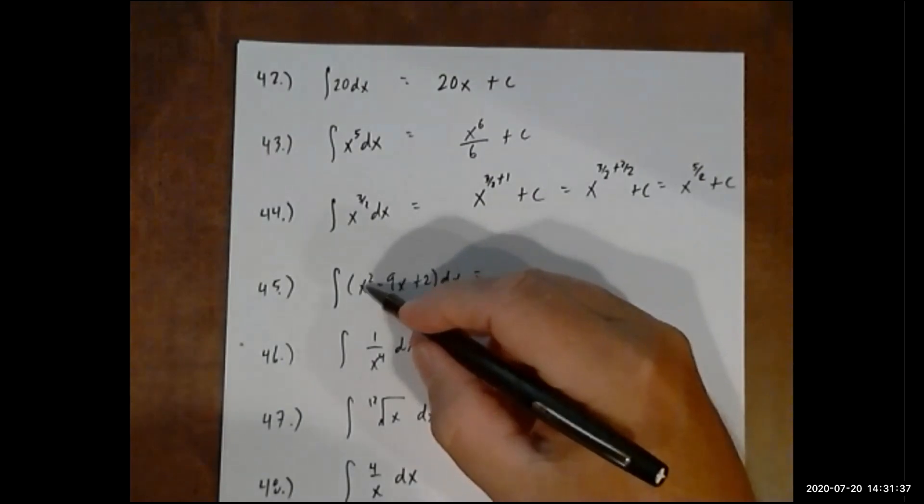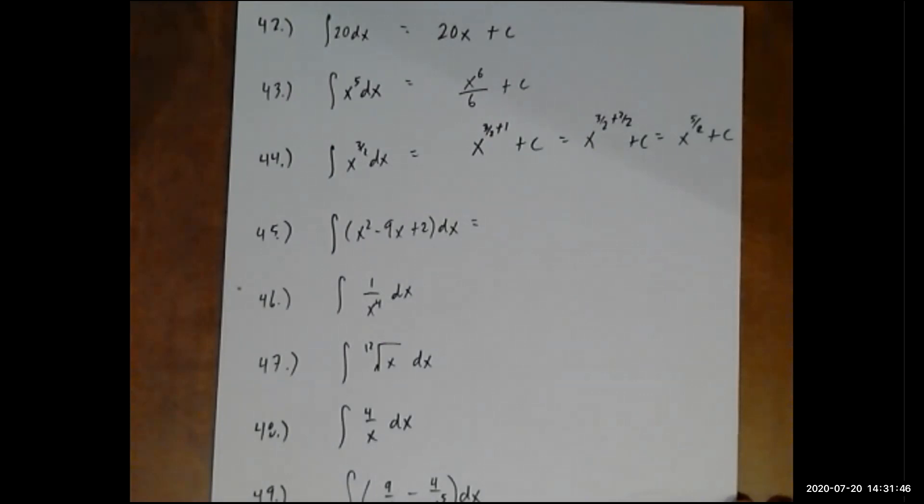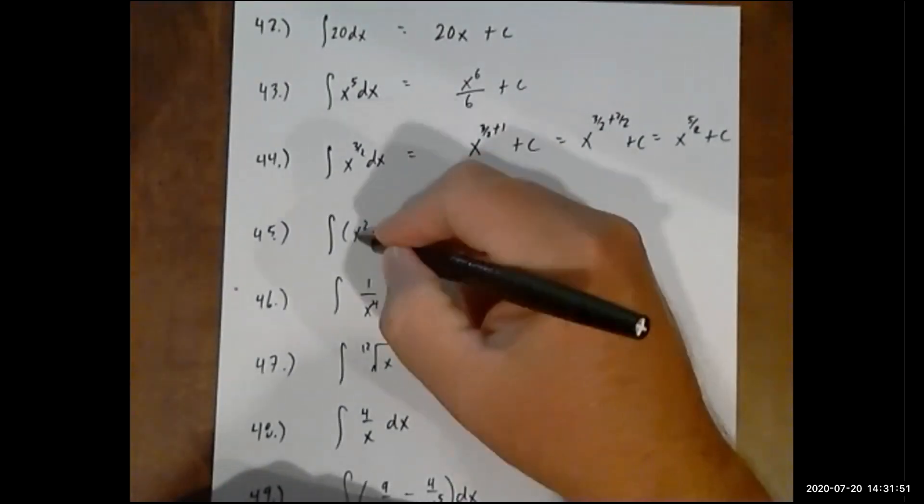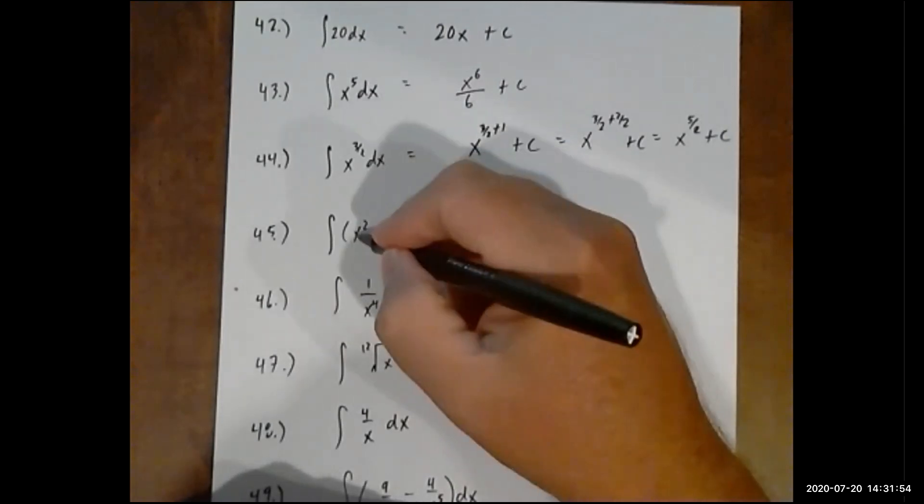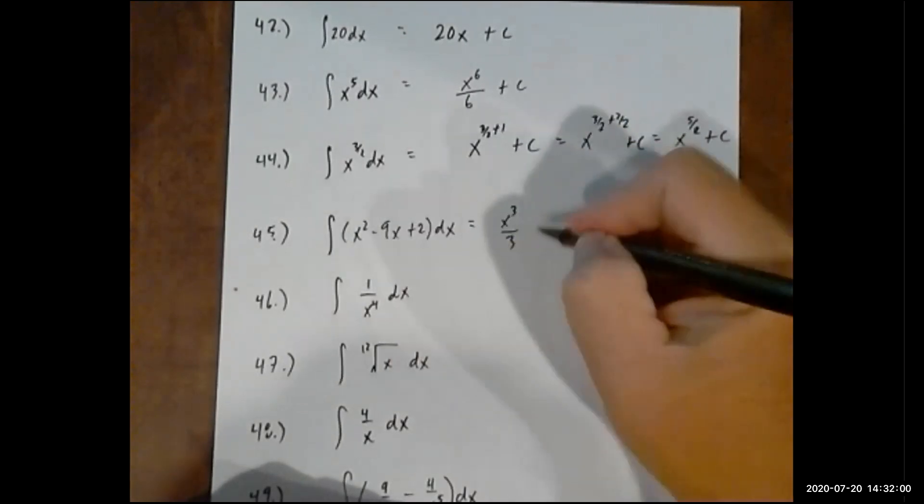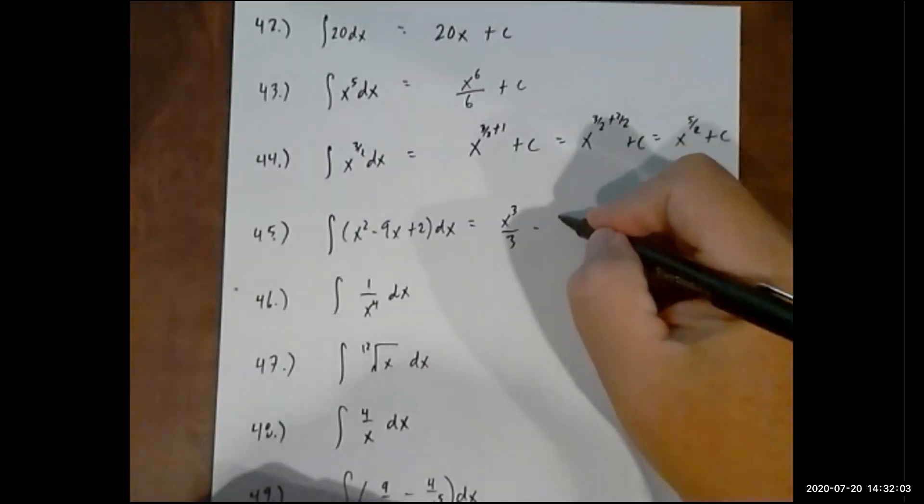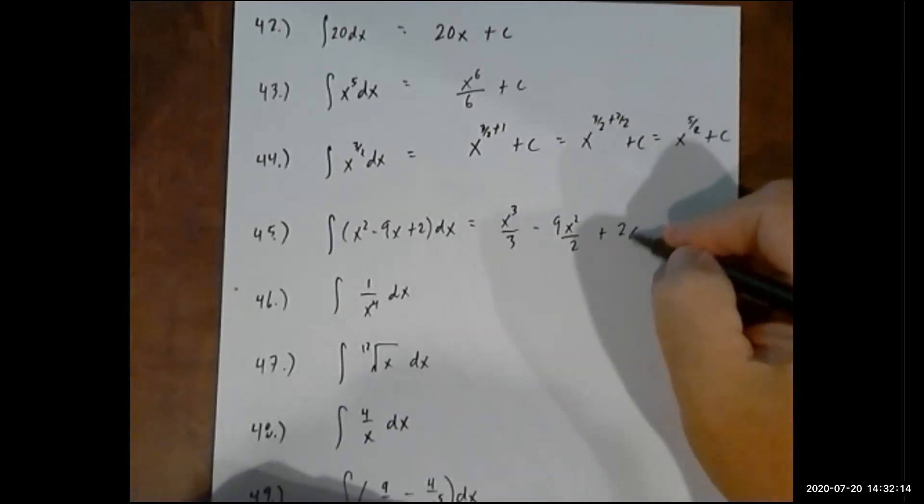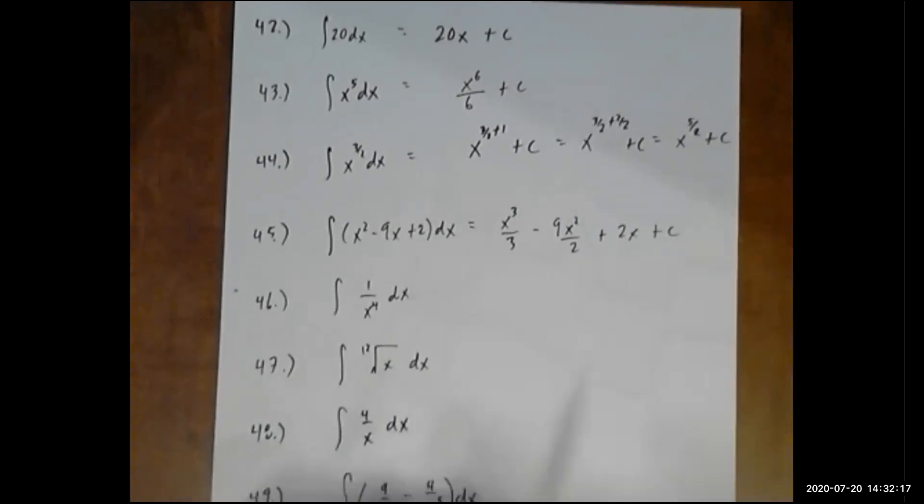Now here, we have three separate terms inside the integral, but the nice thing is you just integrate them one at a time. So since these are added and subtracted together, these are separate terms, and we can integrate them one at a time. So integral of x squared is x to the third over 3 minus, the 9 just tags along, integral of x is x squared over 2 plus integral of 2, just 2x. And of course, we have our plus c.